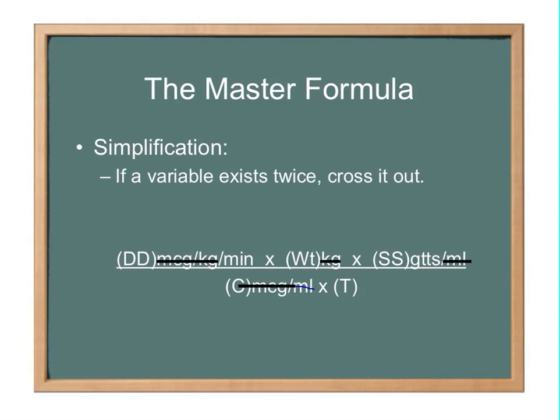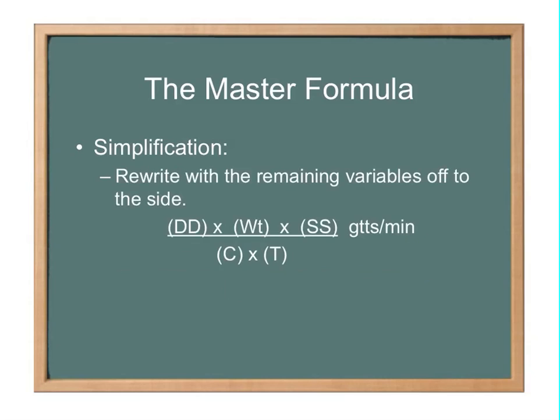If this is confusing you, it'll make more sense when we throw some numbers in there. But this would show you the form that your solution is going to be in. So this particular solution would be in drops per minute because we've crossed everything else out, so you're left with drops and minute. All your infusions are going to end up in drops per minute.